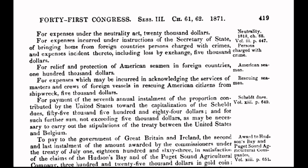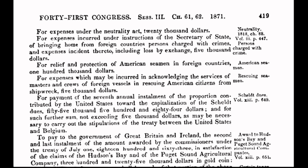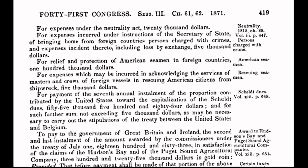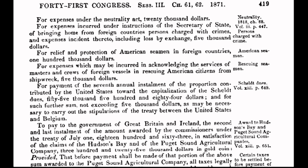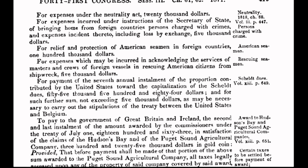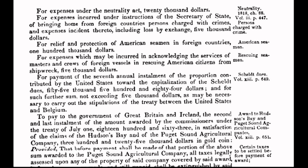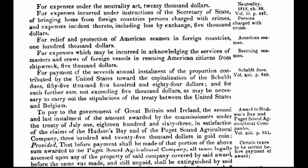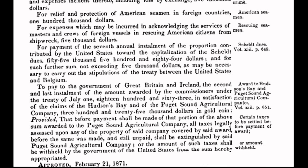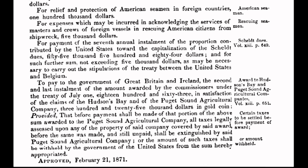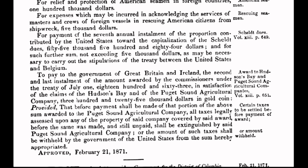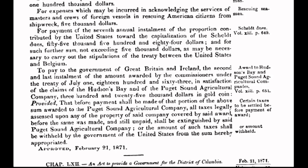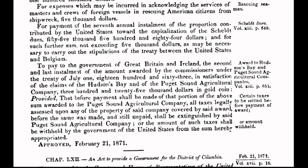In today's program, I will put the spotlight on an act that was enacted in the year of 1871 on February 21st. The Congress passes an act to provide a government for the District of Columbia, also known as the Act of 1871. When you fully understand the ramifications of the past, you will then fully understand the ramifications of the present, and you will know how to change the future. And here is where our story begins.